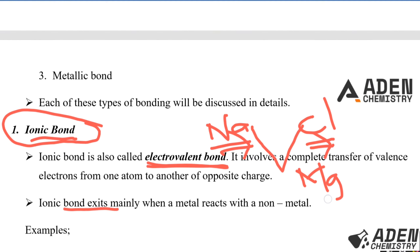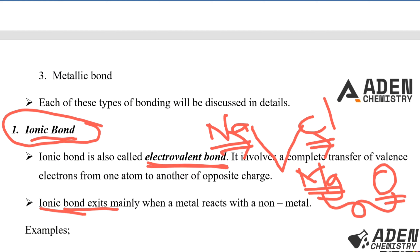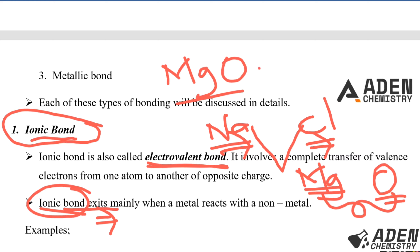For example, when magnesium (a metal) reacts with oxygen (a non-metal), the type of bond that exists between them is ionic bond. During the exam, if asked to name the type of bond in magnesium oxide, the answer is ionic bond because it involves a complete transfer of electrons from one atom — magnesium — to another of opposite charge — oxygen.